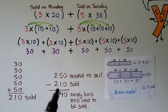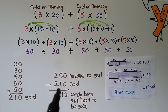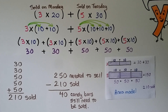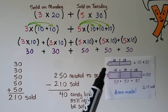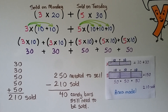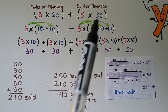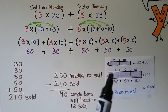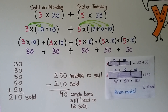They needed to sell 250. We subtract the 210 already sold, so they still need to sell 40 candy bars. We broke 3 times 20 into 3 times 10 plus 10, and 5 times 30 into 5 times 10 plus 5 times 10 plus 5 times 10. You can use an area model with grid paper or graph paper to help.